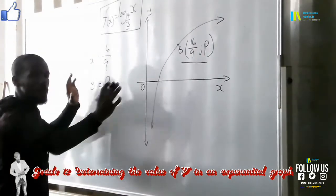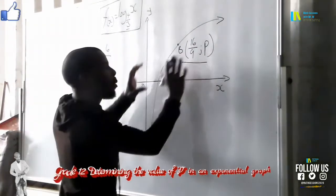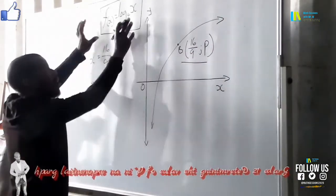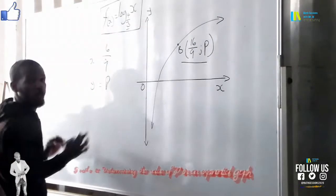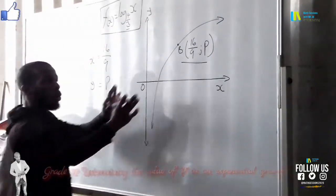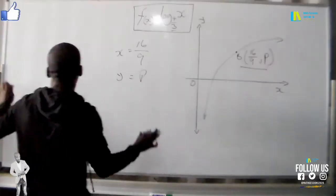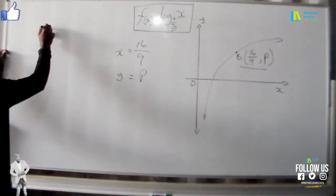It's easy because we are going to take this point because it's right on the graph, the exponential graph which is f(x) equals log base 4/3 of x. We are going to take this point and substitute it right here because f(x) is the same as y.